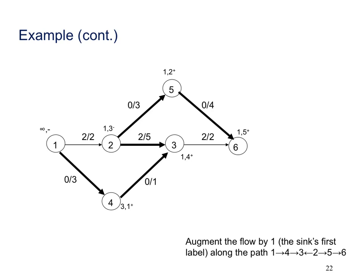Now we augment the flow by tracing back. At the sink (six), flow came from five via a forward edge, so we increase that to 1/4. At five, flow came from two via a forward edge, so we increase that to 1/3. At two, flow came from three via a backward edge, so we reduce that flow to 1/5. At three, flow came from four via a forward edge, so we increase that to 1/4. At four, flow came from one via a forward edge, so we increase that to 1/3. We now have a new flow.